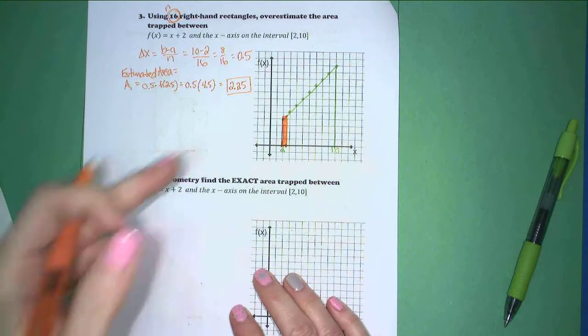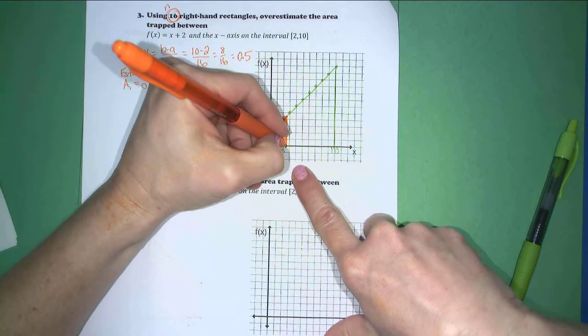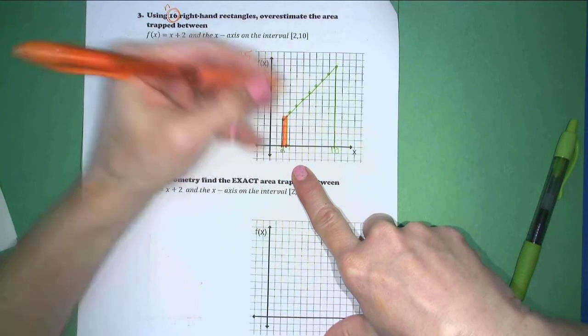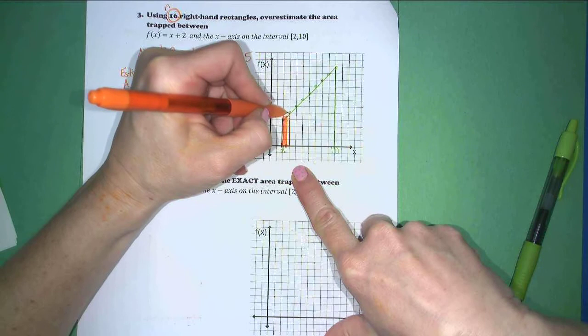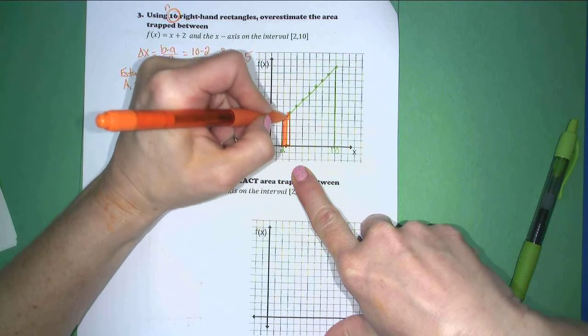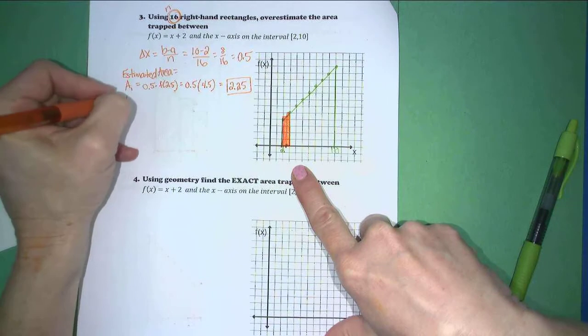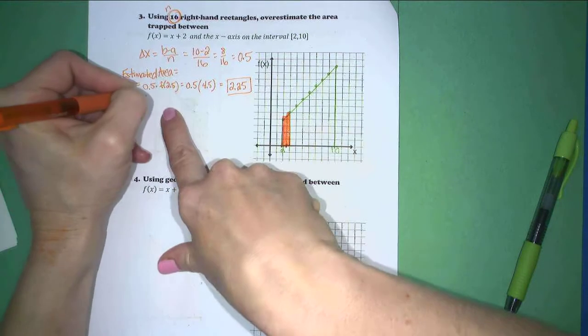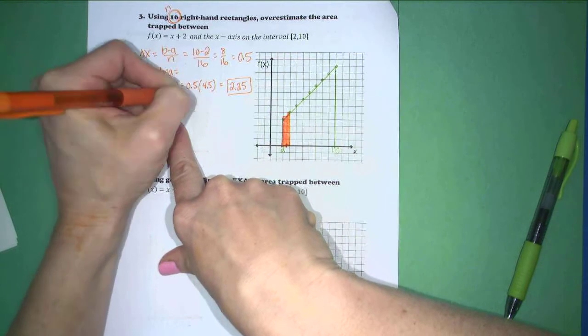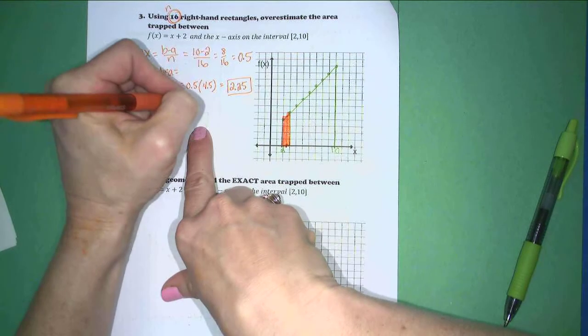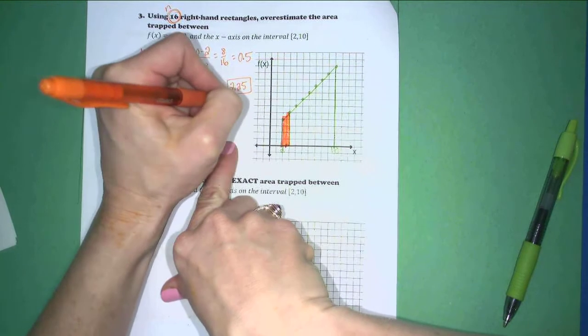And I'm going to keep going in the same fashion. So the next rectangle will run from 2.5 to 3 on the base. I will grab f of 3 to get the height, come across and down, color him in. So area 2 will still be a base length of 0.5, but now I have to grab f of 3. So that's going to be 0.5 times 5, which is equal to 2.5.